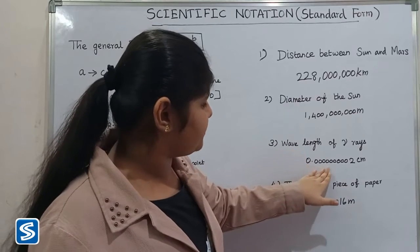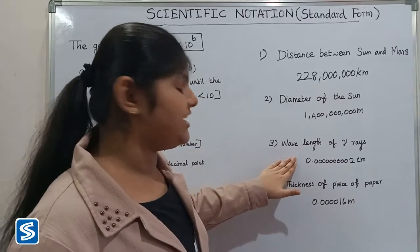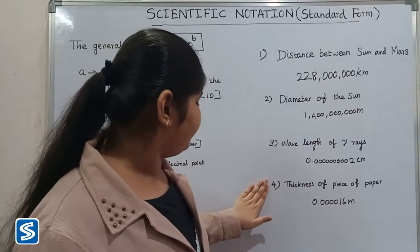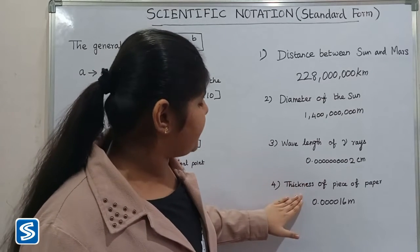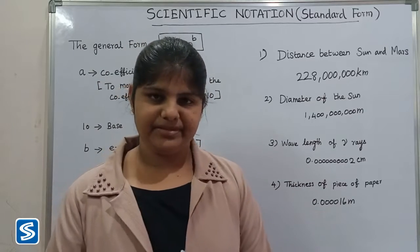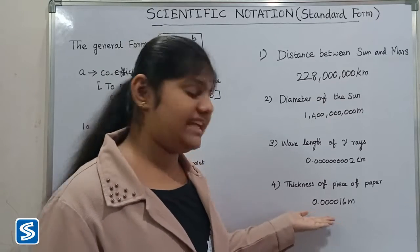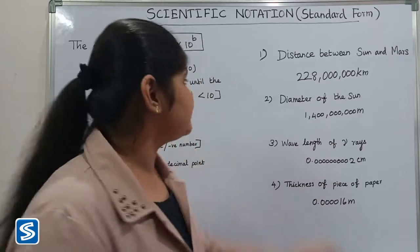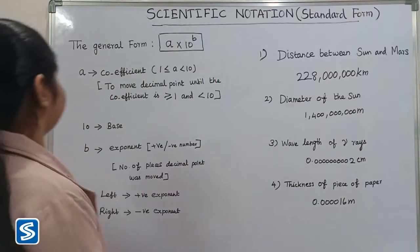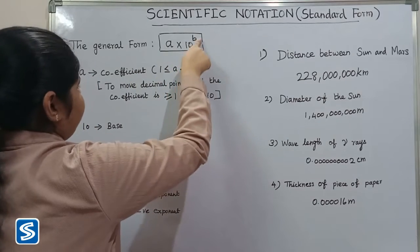The third example is the wavelength of gamma rays: 0.0000000002 centimeters. This is a very small number and also very difficult to read and write. The fourth example is the thickness of a piece of paper: 0.00016 meters, also very small and difficult to read. So we use scientific notation to read and write large and small numbers.